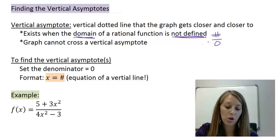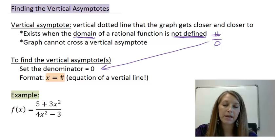So we can see down here, to find the vertical asymptote, we actually just do that by setting our denominator equal to zero.